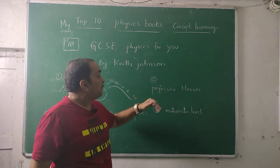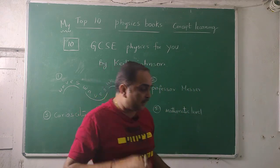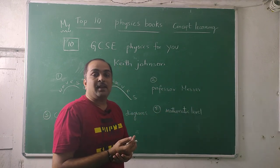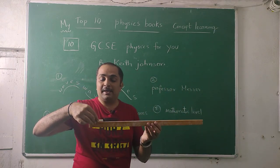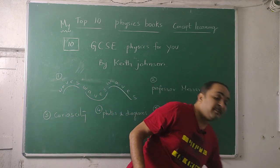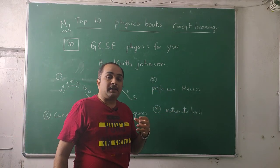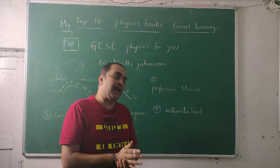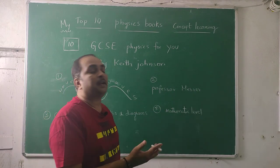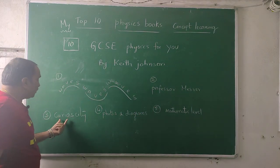The second important feature of this book is Professor Messer — an imaginary, fictional cartoon character. Professor Messer commits silly mistakes. For example, when measuring the length of a chalk piece, instead of measuring from the beginning he measures from the end and says it is 95 centimeters, which is wrong. Keith Johnson uses this character to show what kind of mistakes can happen. Almost in every chapter, Professor Messer appears four or five times, confusing us and pulling us back to think carefully.